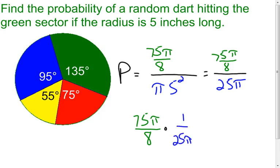Now, the reason I do that is because now I can do some simplifying. My π's are going to divide out. The 25 is going to become a 1. The 75 is going to become a 3. And now, I have some pretty easy multiplication.